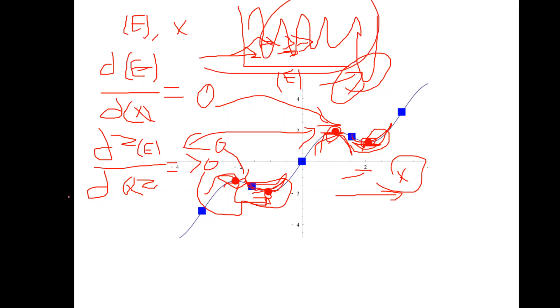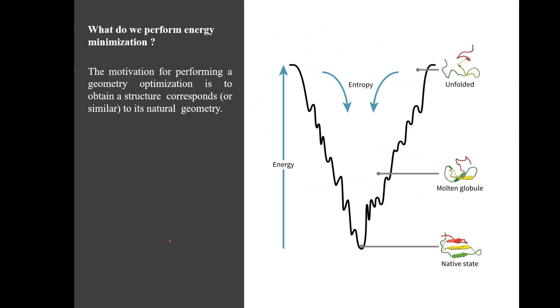By steps, I mean how many times you need to change your coordinates to discover or explore the local minima you have in your potential energy surface. Why do we perform energy minimization again? This is the energy surface of a protein—this is the native state we have in our body, which stays in the local minimum, and here is the unfolded state.